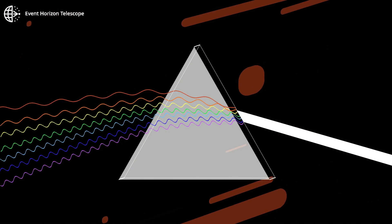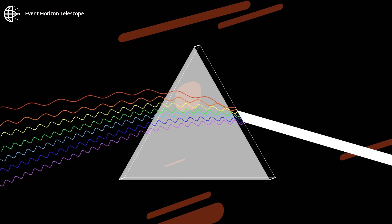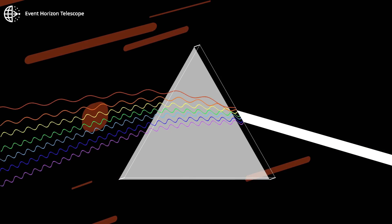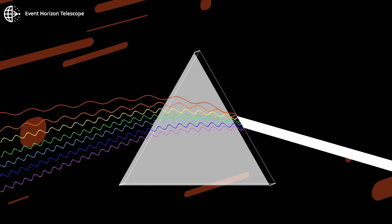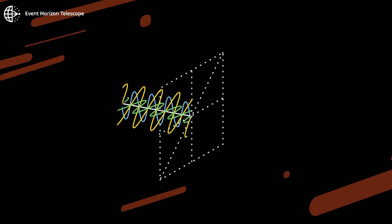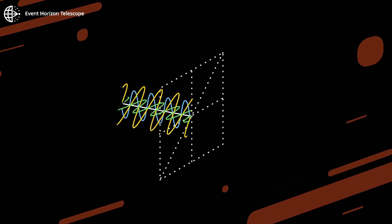The electric field component of a light wave can oscillate in any direction perpendicular to the direction of travel. Light from the sun oscillates in all directions. We say it is unpolarized.